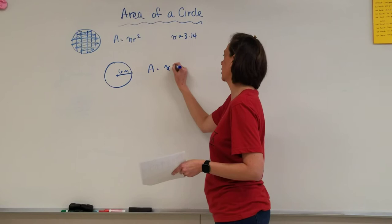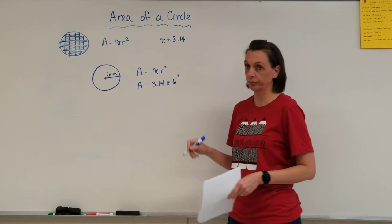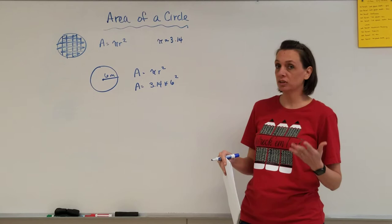So, area equals pi, 3.14, times a radius of 6 squared. Order of operations, we know we have to do our exponents before we multiply. That is always going to be your first step.